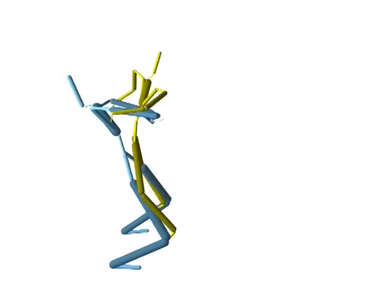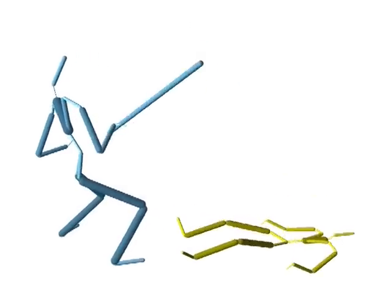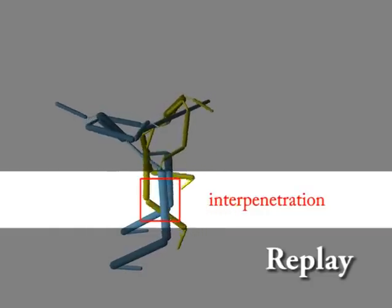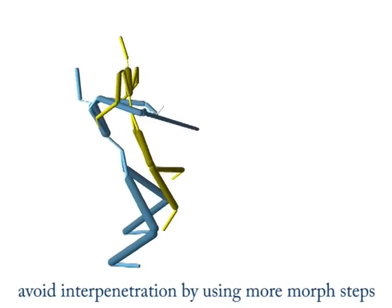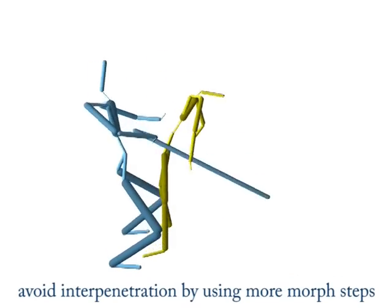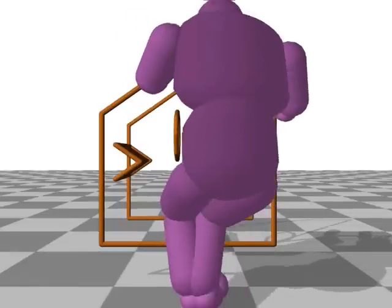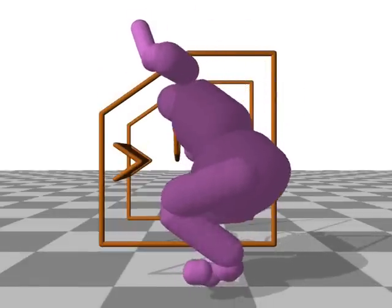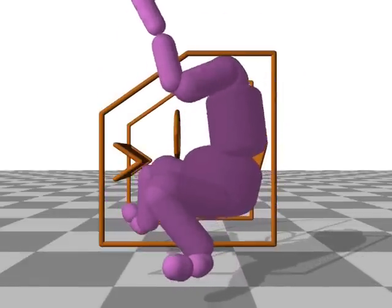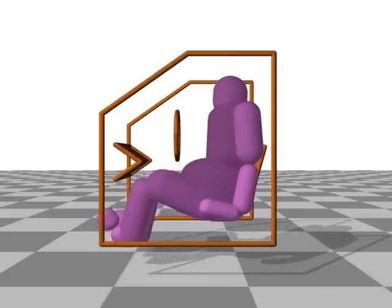Here we show two cases where our method can fail. When the body sizes are set too narrow, the tetrahedra flipping in the interaction mesh can cause the body parts to pass through each other. This can be avoided by widening the body parts and using more morph steps. When the open space is limited and the body is enlarged too much, the bodies may penetrate the environment, as we use soft constraints to handle collision constraints.